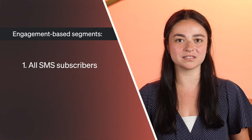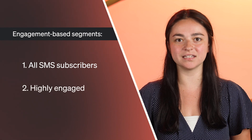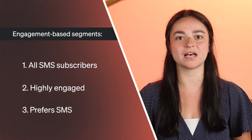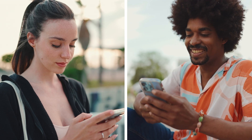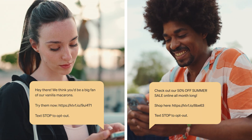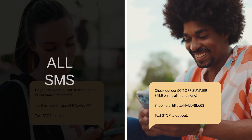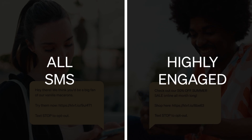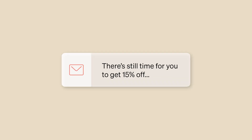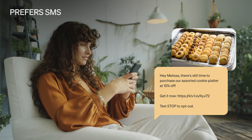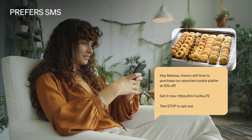All SMS subscribers, highly engaged, and prefers SMS. Send SMS messages about new product alerts, flash sales, and urgent updates to your all SMS subscribers and highly engaged segments. And since you know your prefers SMS segment likes to hear from you via text, try pairing an email campaign with a corresponding SMS campaign to that segment to increase engagement.